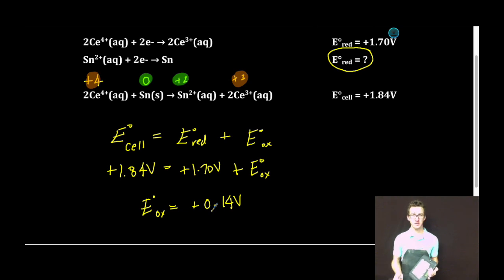Now be careful. This question is asking us for the reduction potential of tin. We determined its oxidation potential. Its reduction potential is going to be the same numerically, but opposite in sign. So our final answer here, negative 0.14 volts.